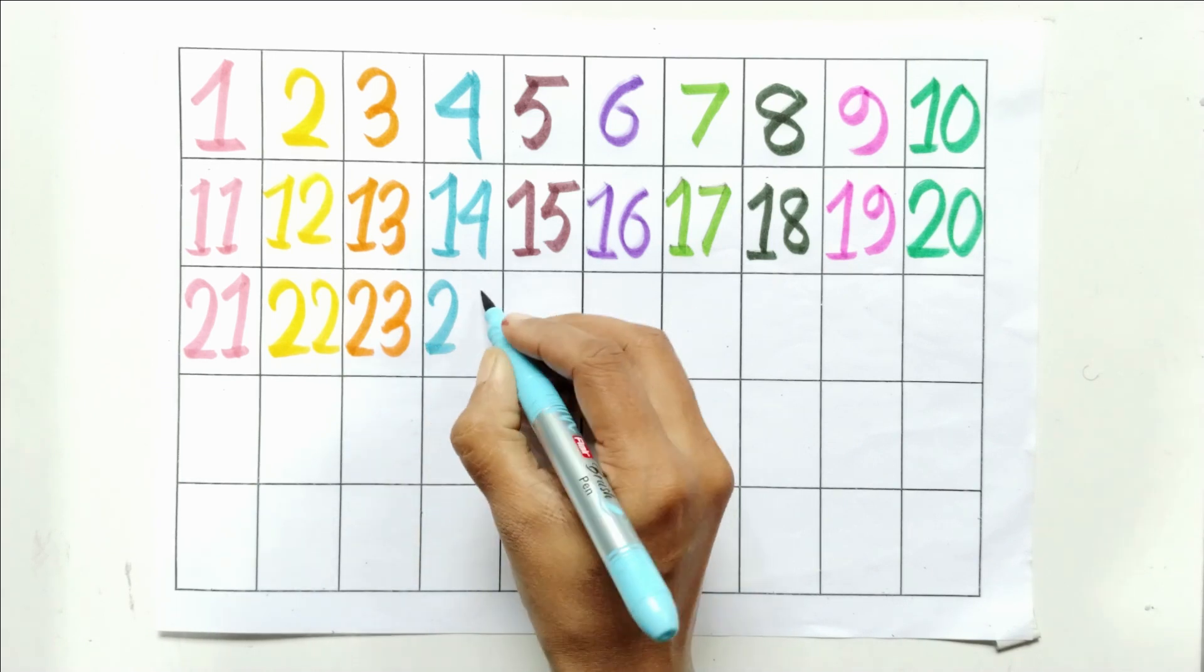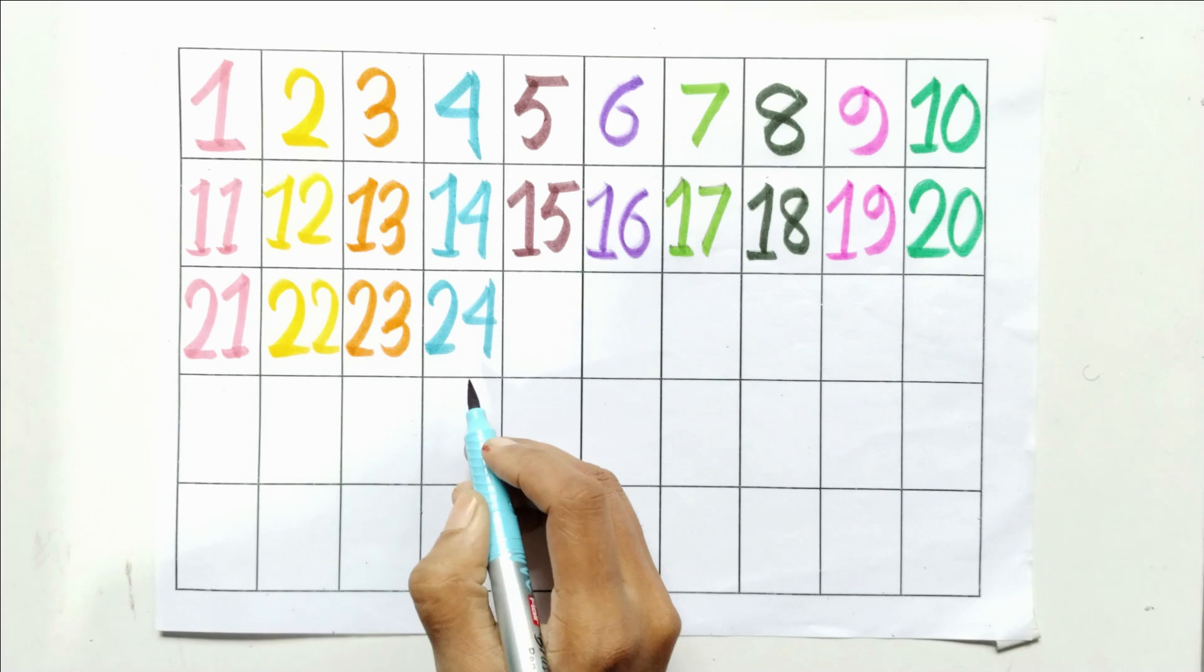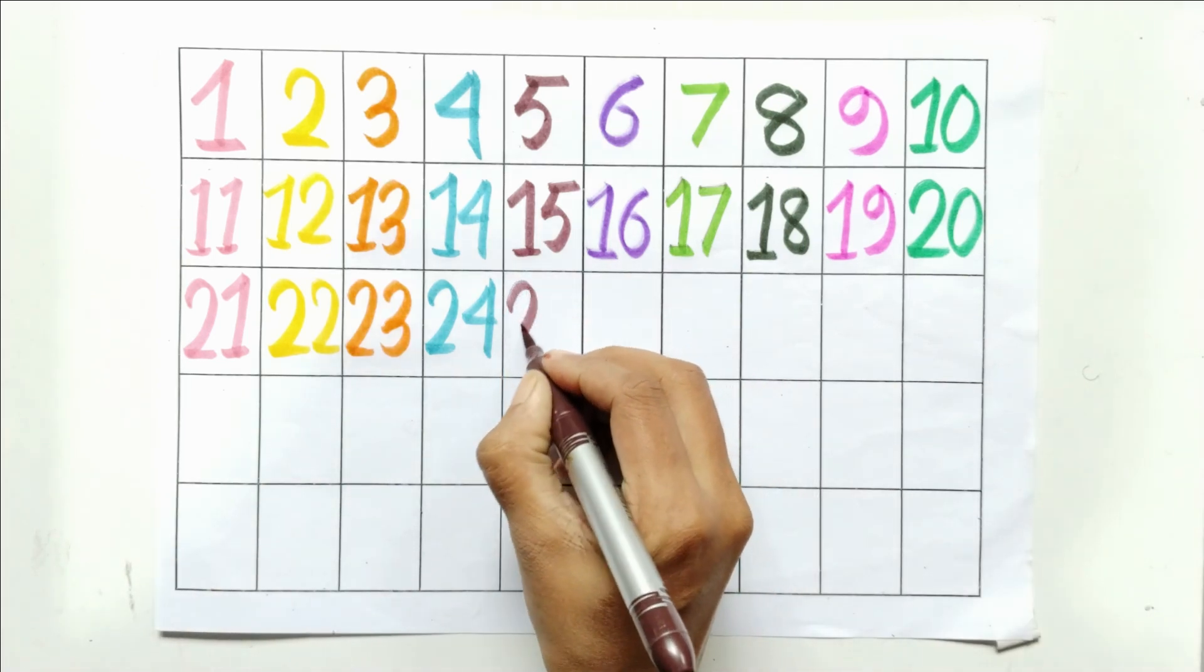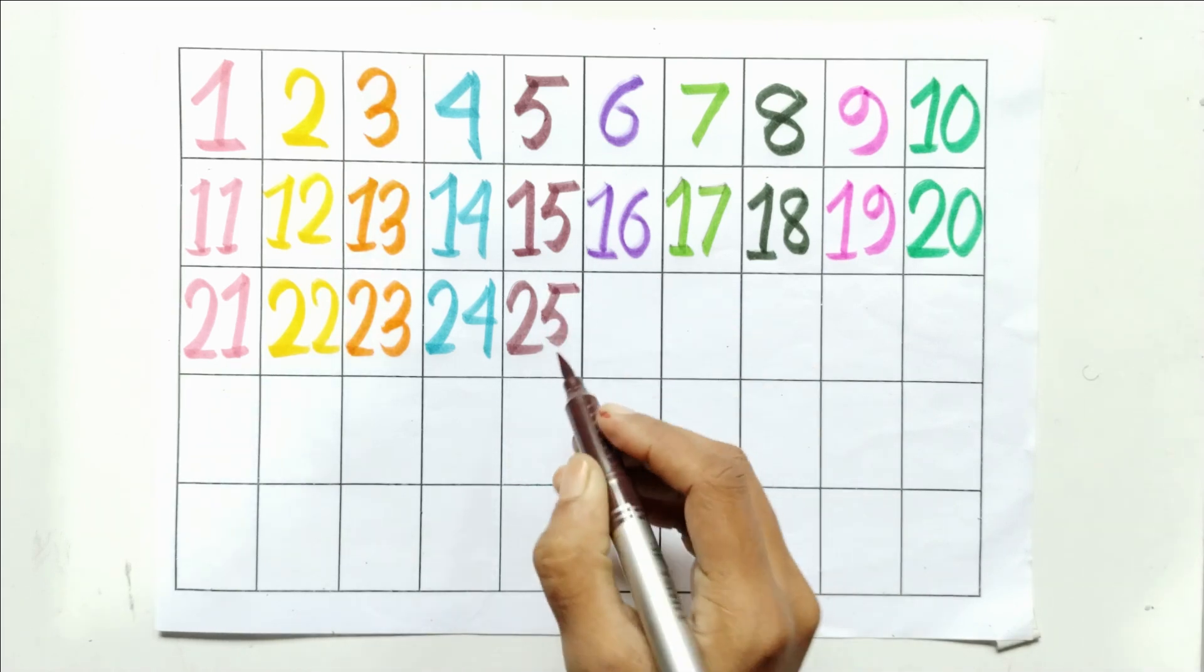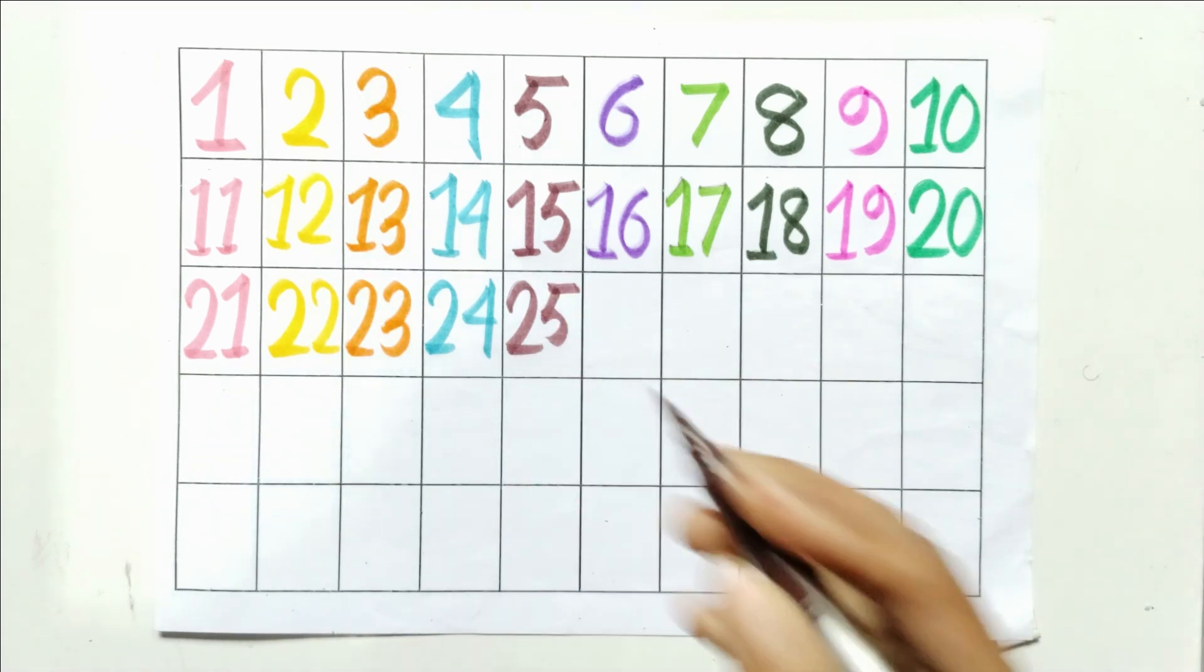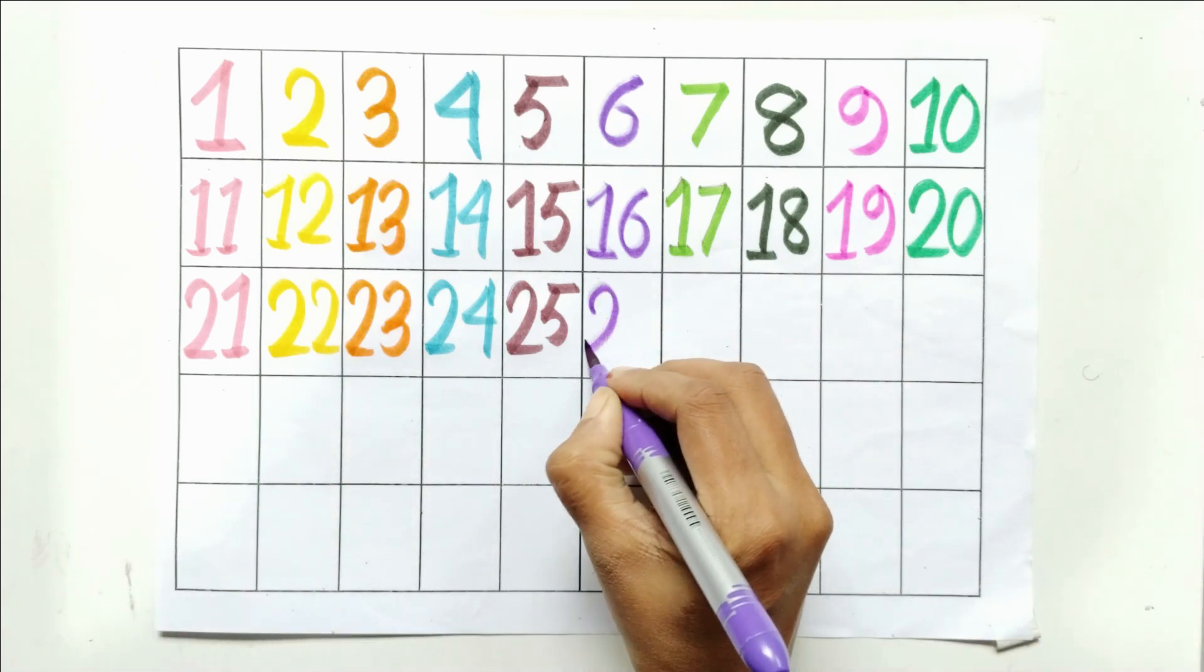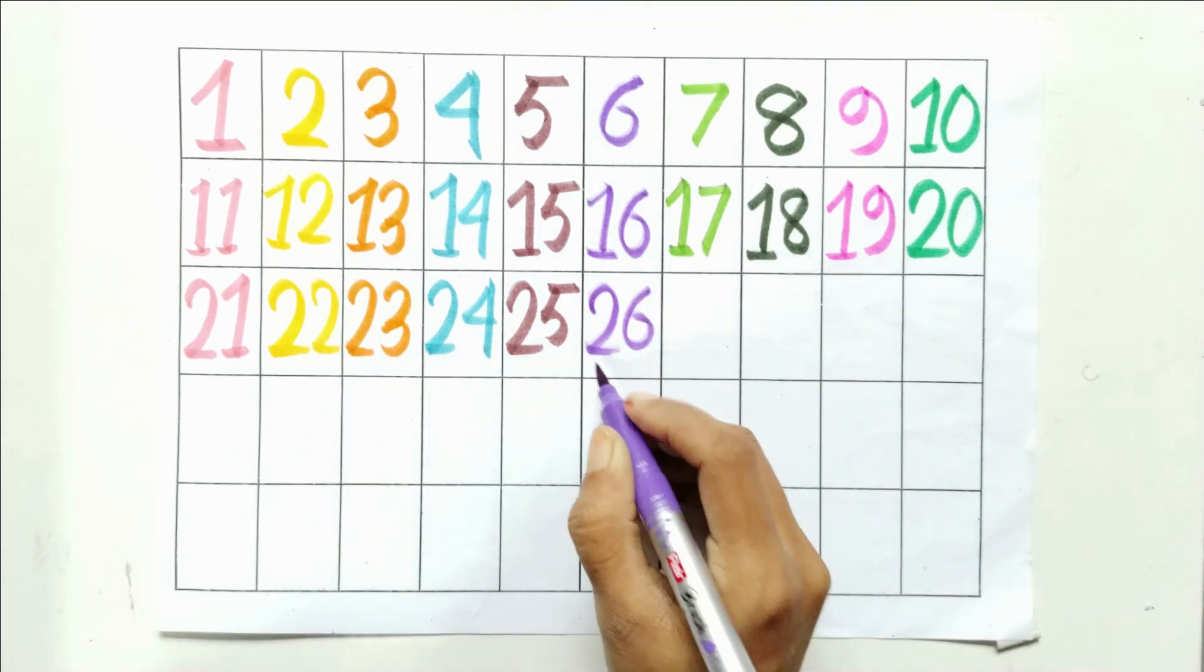Two and four, twenty-four. Two and five, twenty-five. Two and six, twenty-six.